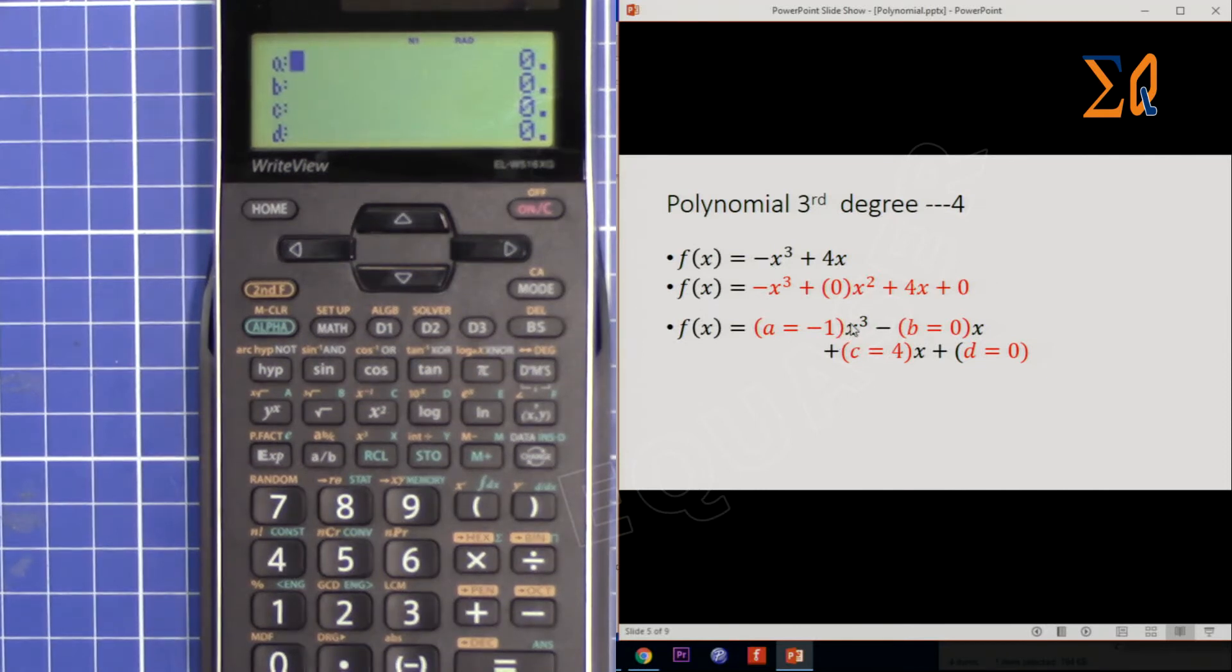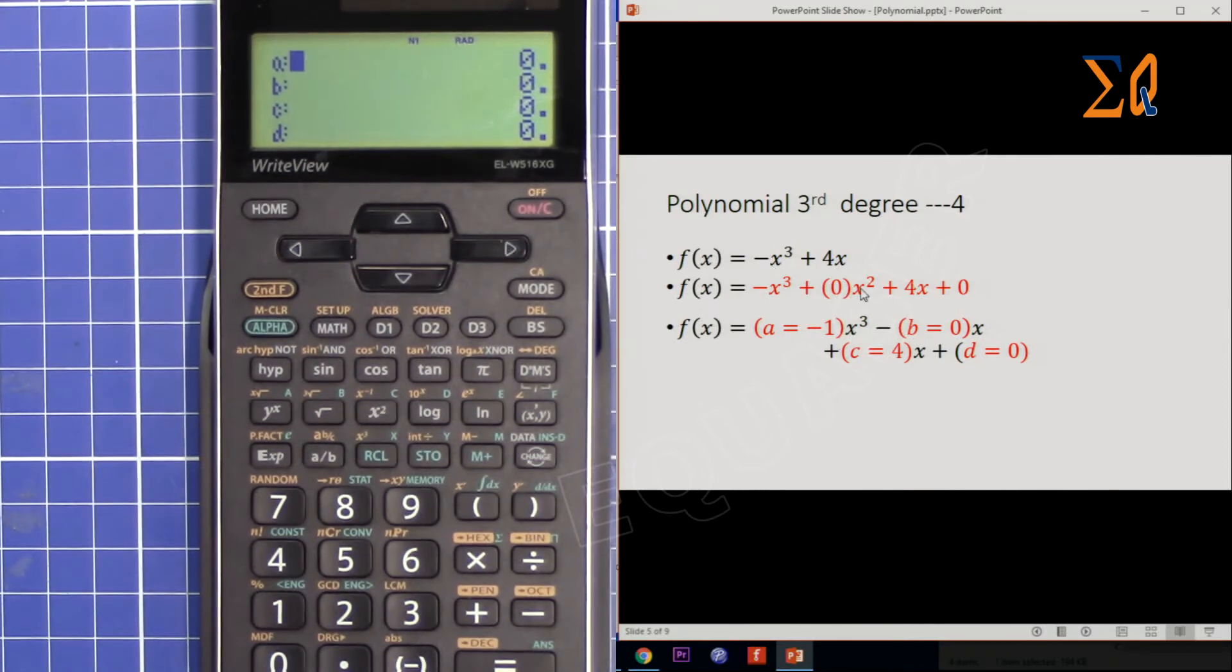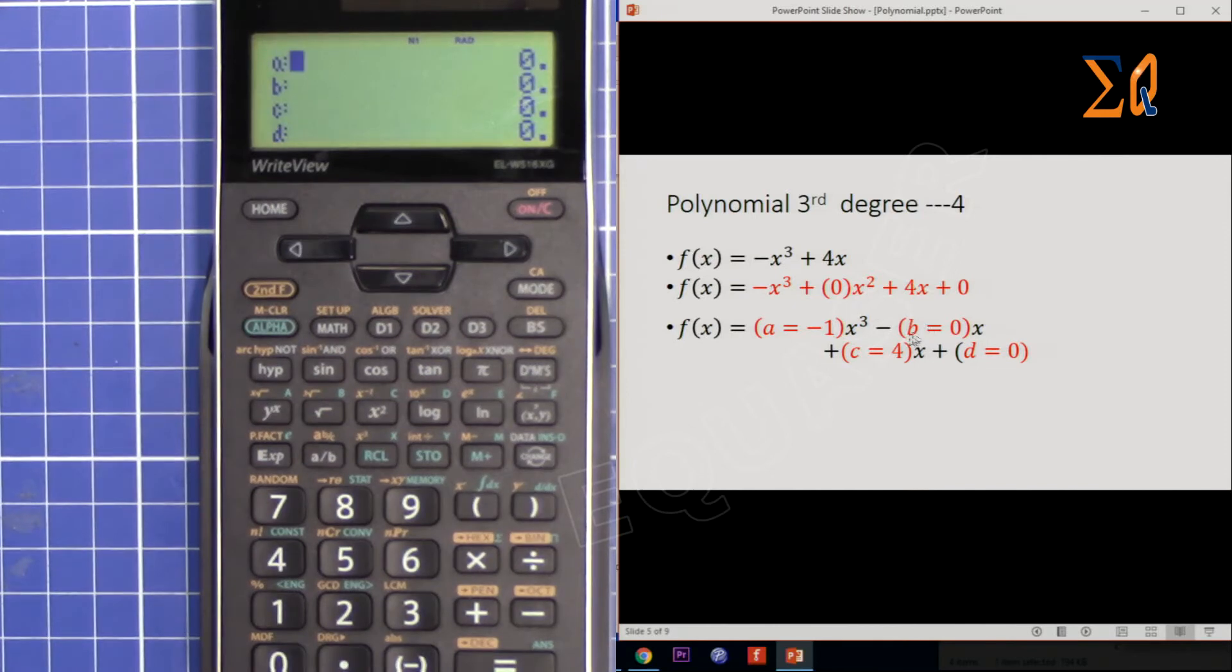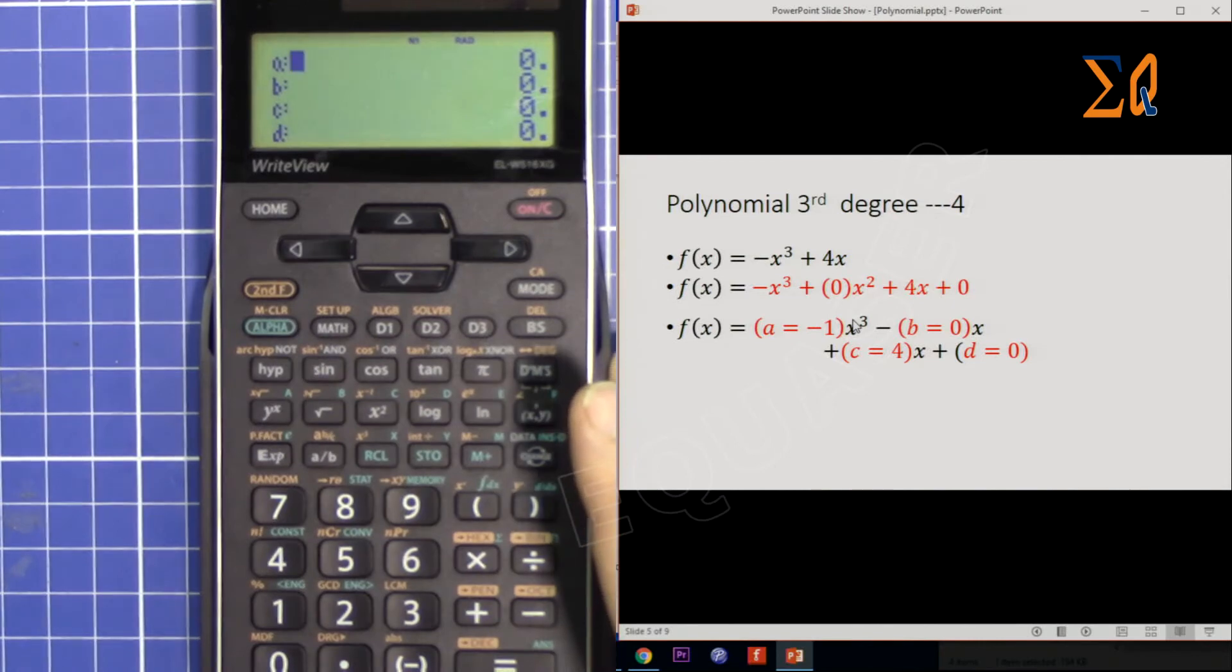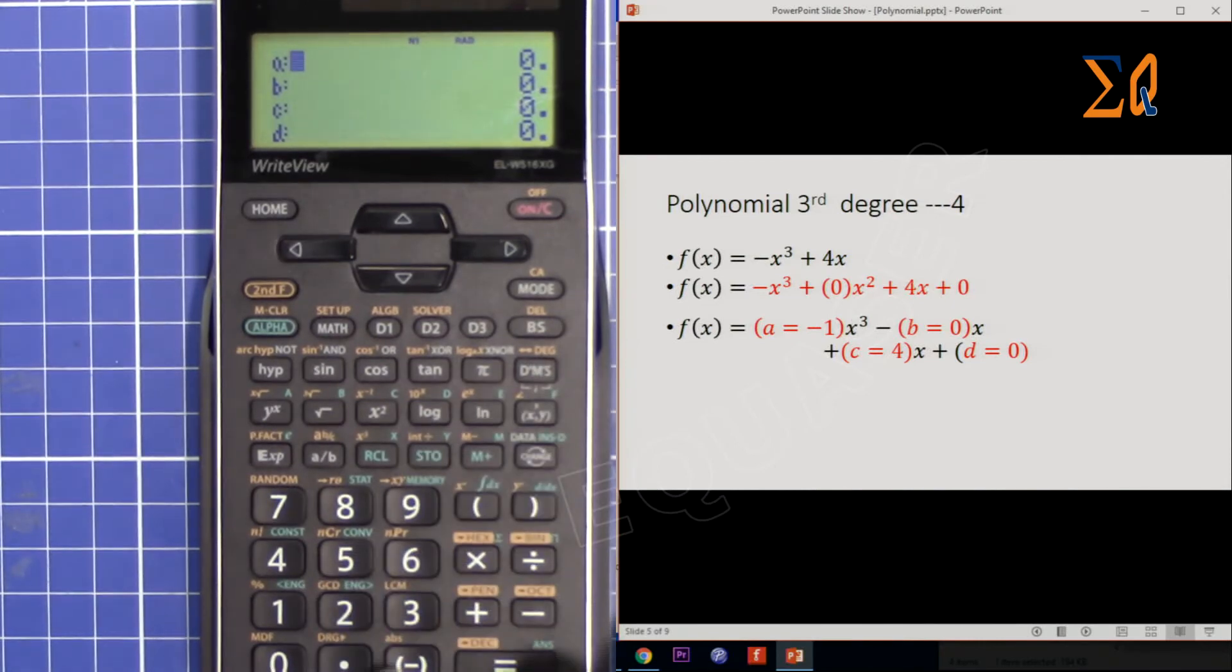That's very important—I purposely selected that example so you will understand it. I'm pressing the lower minus, then 1, then equal sign. B is 0, c is 4, and then d is 0.